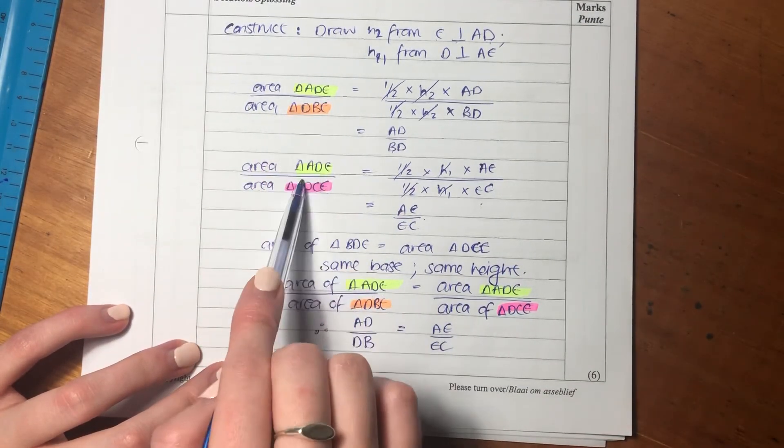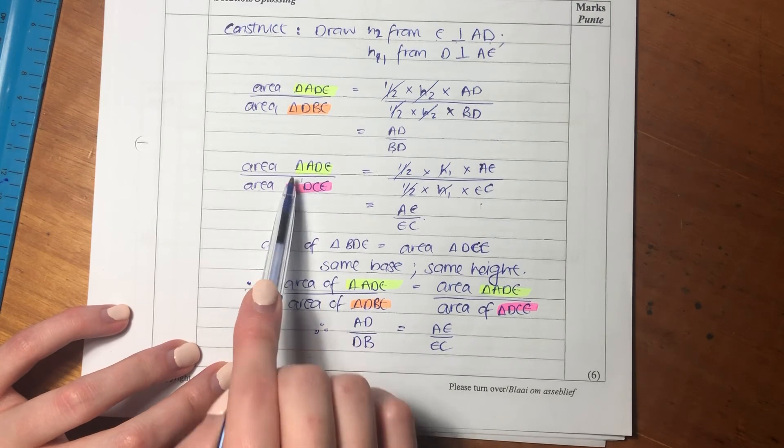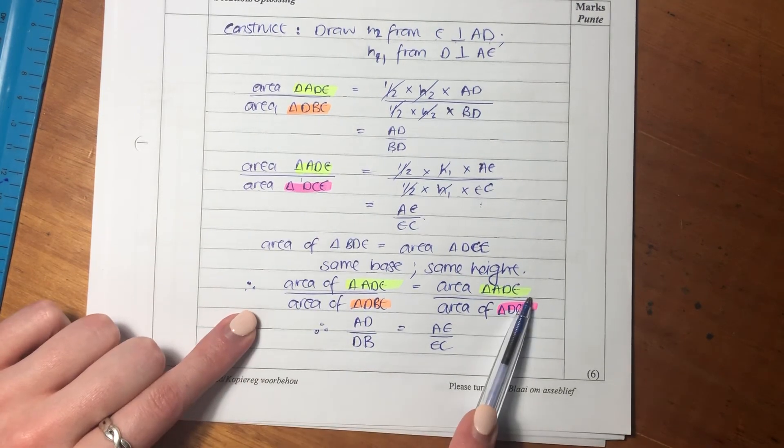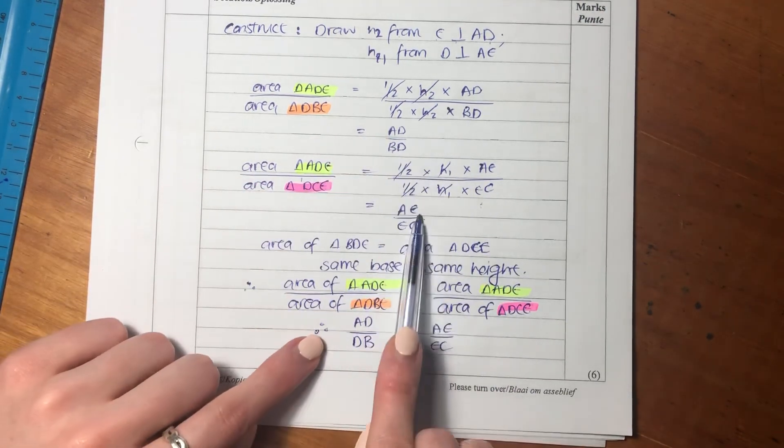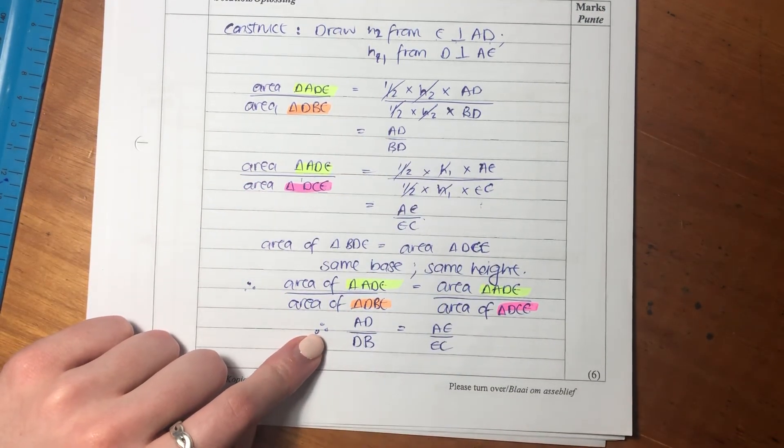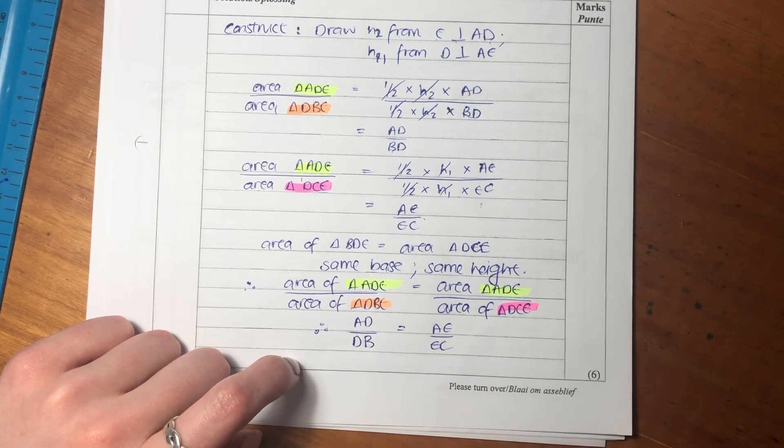Therefore, these two sums that we have over here, their answers equal each other. And because their answers equal each other, their final answers that we got there equal each other, and we have proved the proportionality theorem.